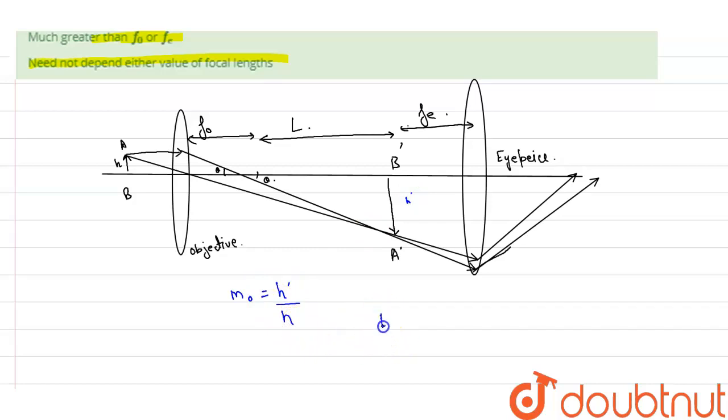And what is tan theta over here? Tan theta over here will become H divided by the focal length of the objective lens. This should be also equal to H dash divided by L.